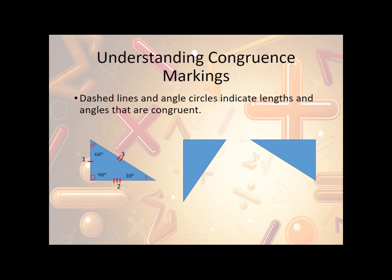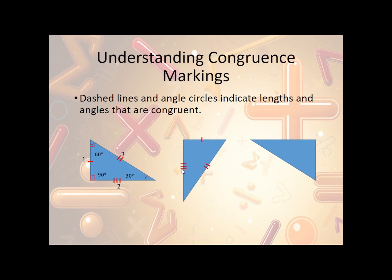We can use dash lines and angle arcs to indicate which lengths and angles are congruent. For instance, this side has a single dash, and we put a single dash on its corresponding side — that means those two sides are congruent. Then we use a double dash on another pair of corresponding sides to show those are congruent, and a triple dash for the third pair. This continues across all three triangles: single dashes are all congruent, double dashes are all congruent, and triple dashes are all congruent.